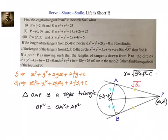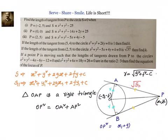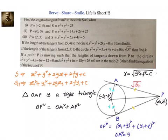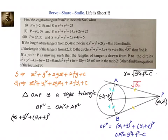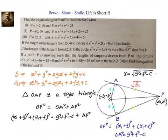We know OA equals the radius. Let us write down what OP is. OP² = (x₁ + g)² + (y₁ + f)². And OA² = radius² = g² + f² − c. Now let us go back and substitute these values. We will have: (x₁ + g)² + (y₁ + f)² = g² + f² − c + AP².